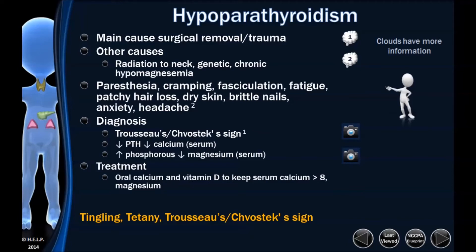The main cause of hypoparathyroidism is surgical removal or trauma. Also remember radiation to the neck and chronic hypomagnesemia as causes. Phosphorus, magnesium, and calcium really can't be separated in the way they're dealt with — they affect each other. So chronic hypomagnesemia is also a cause of hypoparathyroidism to keep in mind.